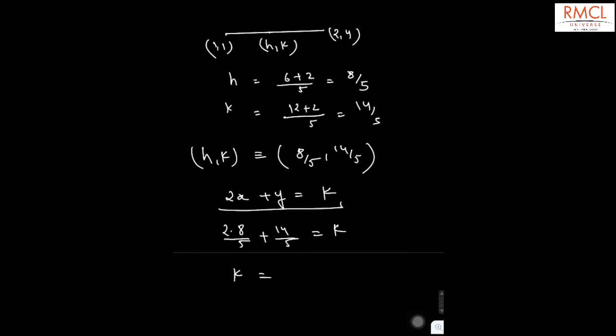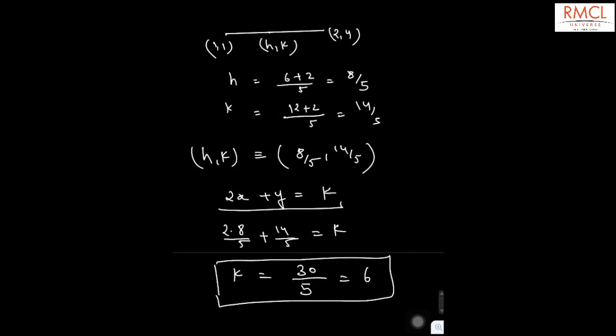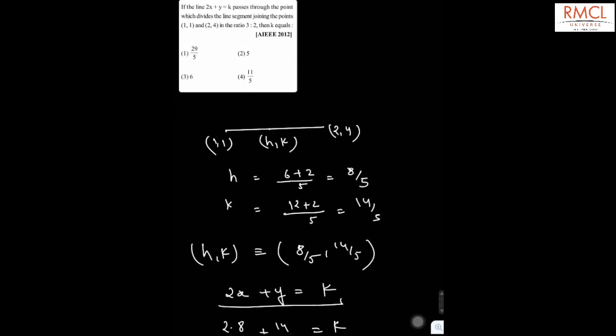Therefore the value of k is 30 by 5, so that is 6. So the value of k is 6. Therefore the correct answer is option number 3.